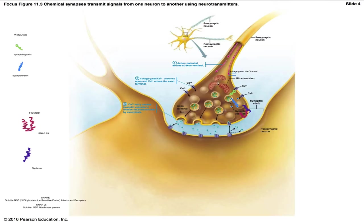This video is going to cover SNARE proteins. In the general ANP textbook, they mention SNARE proteins in practically one or two sentences, so I made this video to help you get a better understanding of what's going on at this junction. SNARE stands for soluble NSF attachment receptors, and NSF stands for N-ethylmaleimide sensitive factors.